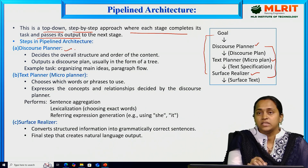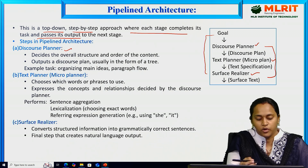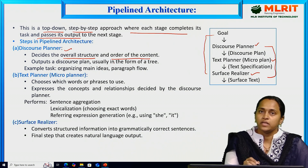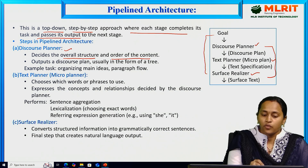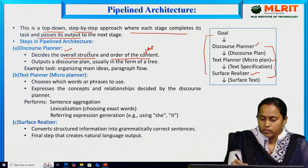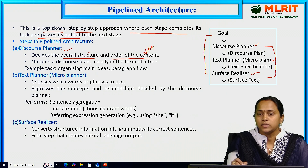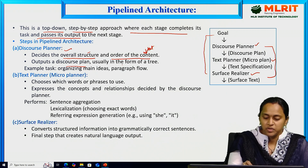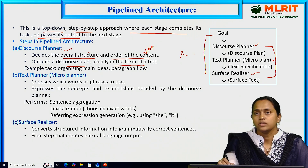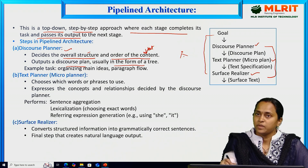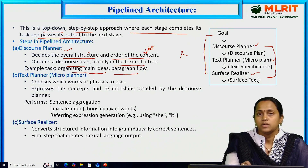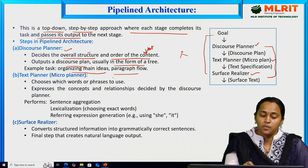The first stage is the discourse planner, also called the document plan. It decides the overall structure and order of the content — how the document is described and organized. The output of the discourse planner is usually in the form of a tree structure, with parent nodes and child nodes representing a step-by-step process. Examples include organizing main ideas, paragraph flow, and architecture flowcharts.